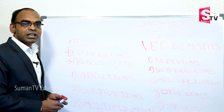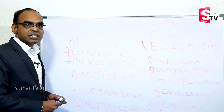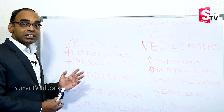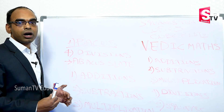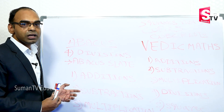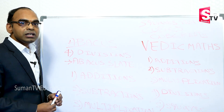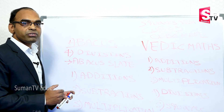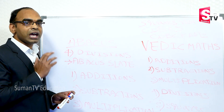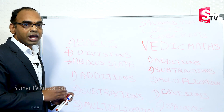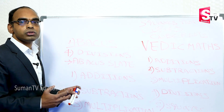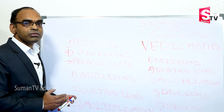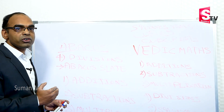In Abacus, initially we will depend on the Abacus slate. At later levels, we will imagine that slate and perform the operations with the help of the mind. But in Vedic Math, from the initial stage onwards, we perform each and every calculation with the help of our mind only. We will not use any gadgets, we will not use any pen or pencil for calculations.